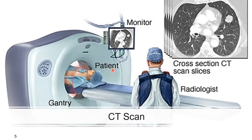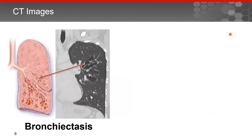The images can also be reformatted in different orientations, but the cross-sectional view is the most common. On a typical image, the heart appears in the middle of the scan; the lungs show up with air appearing dark or black. A white area in the middle would represent a tumor or mass in a particular patient.